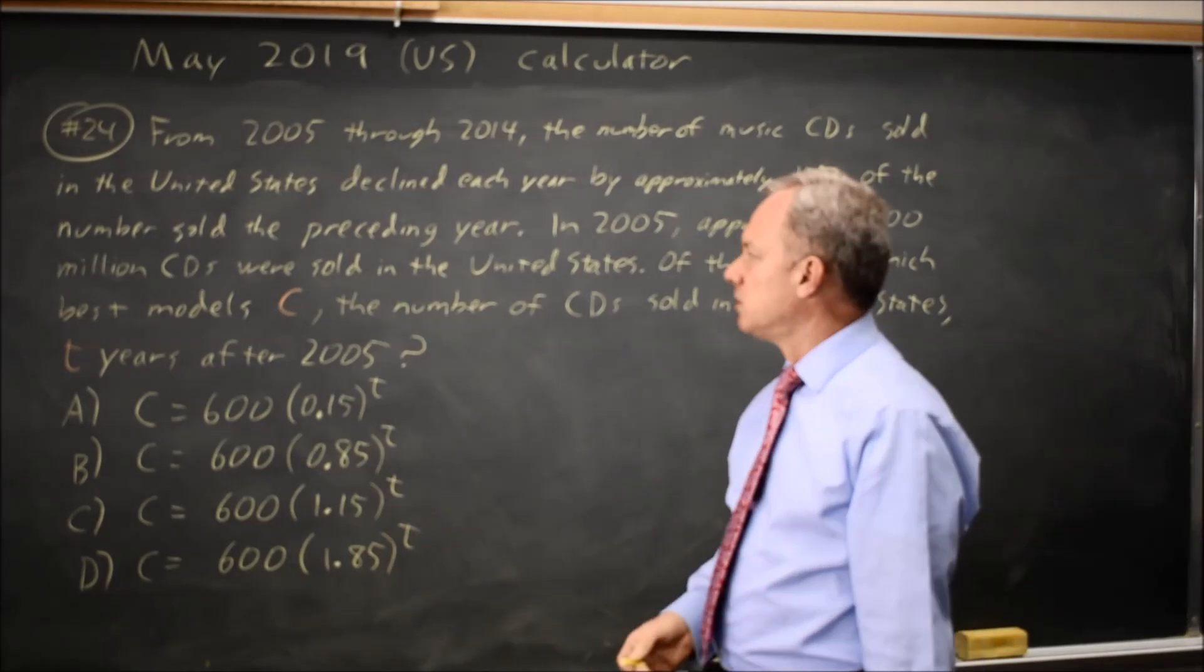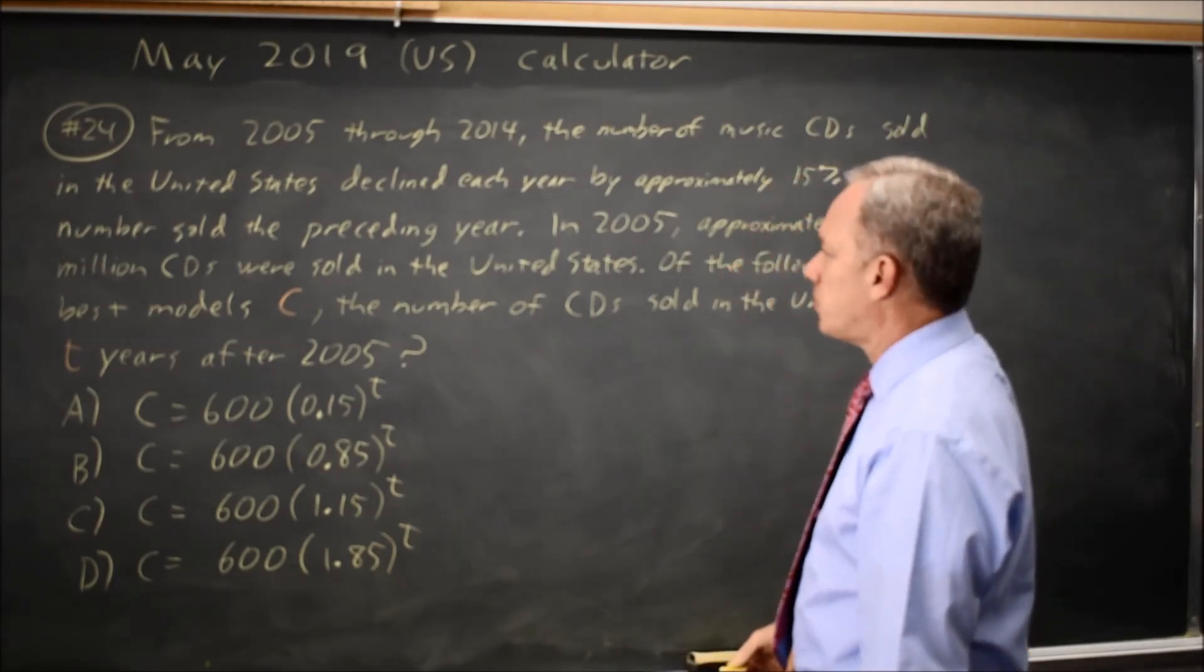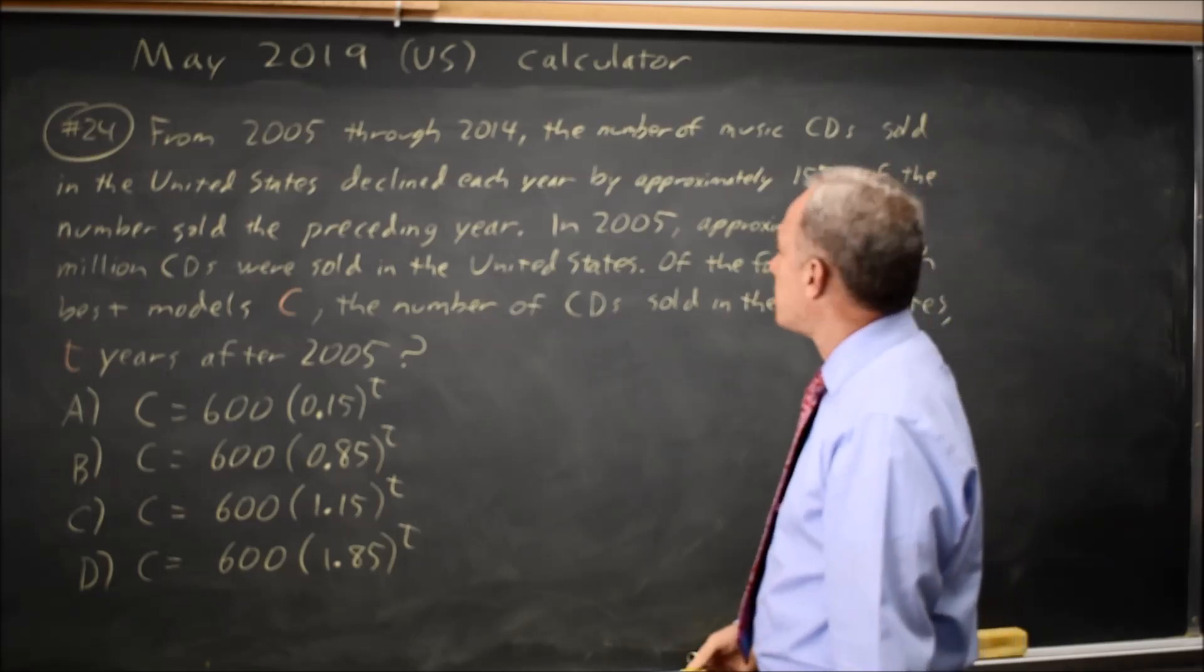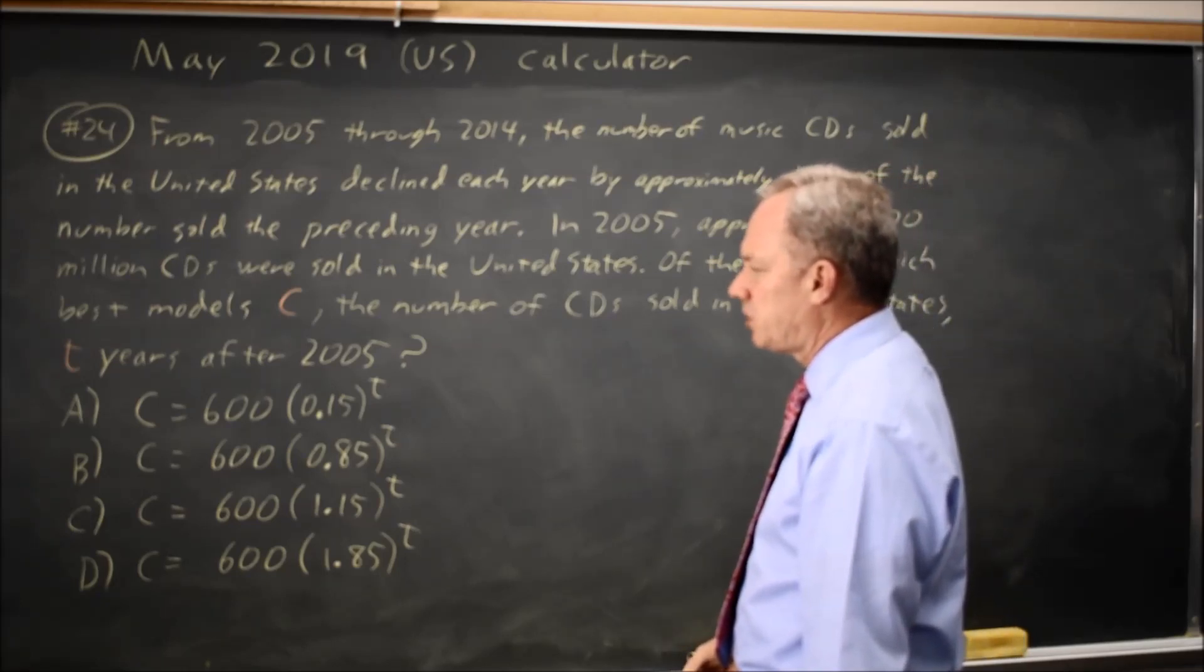And all our choices are exponential. The question is, which models the number of CDs sold two years after 2005, where we decline by 15% each year.